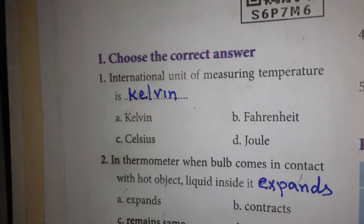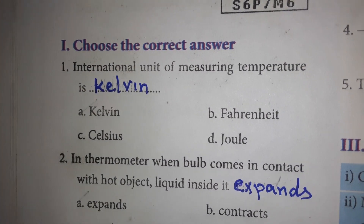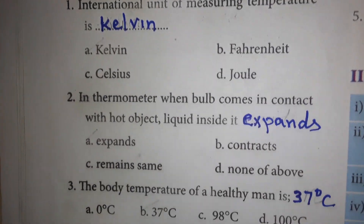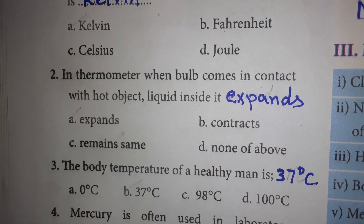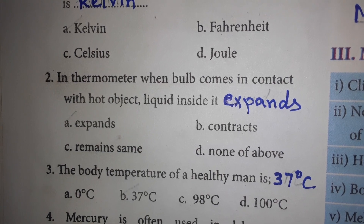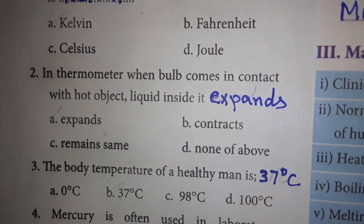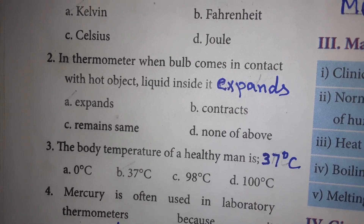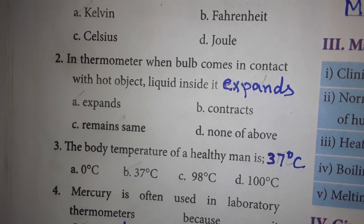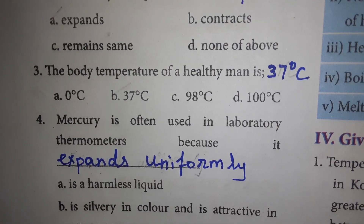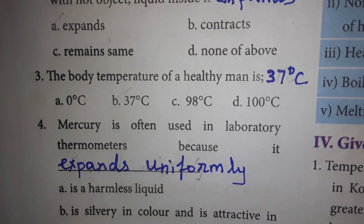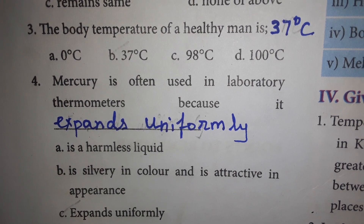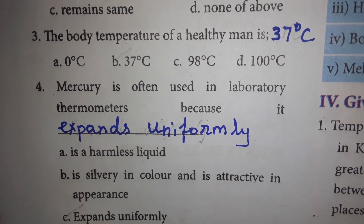First, we will see the Choose the Correct Answer section. The international unit of measuring temperature is Kelvin. In a thermometer, when the bulb comes in contact with a hot object, the liquid inside it expands. The body temperature of a healthy man is 37 degrees centigrade. Mercury is often used in laboratory thermometers because it expands uniformly.